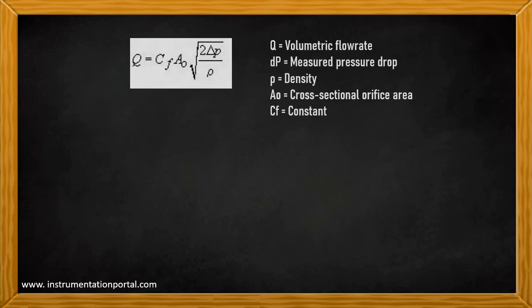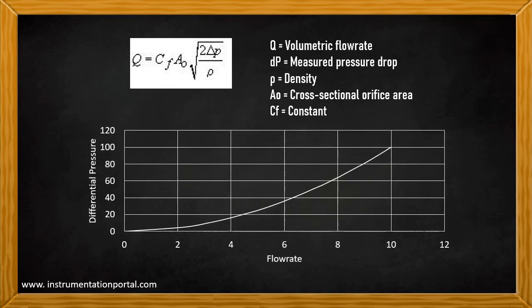Why does orifice meter have a low turndown ratio? According to Bernoulli principle, the relationship between flow and pressure drop of fluid passing through an orifice is given by the following formula. Hence, the flow value could be obtained by measuring pressure drop. But the relationship between them is square root, not linear.